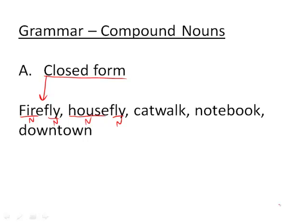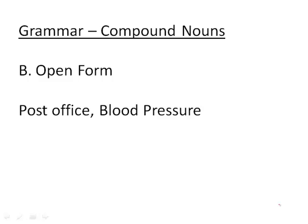Now you have to tell whether a compound noun is closed form or open form. Post office, blood pressure—these are nouns that are open form, meaning that there is a space between them. They are compound nouns, but they are separated. That's why we call them open form.